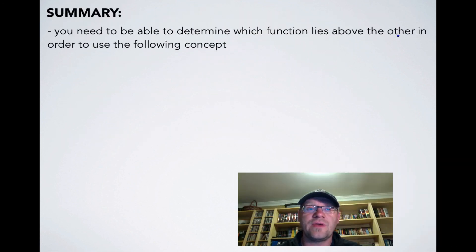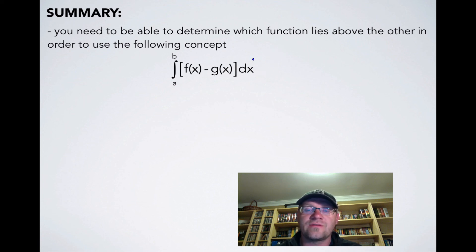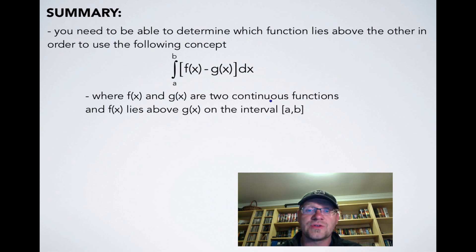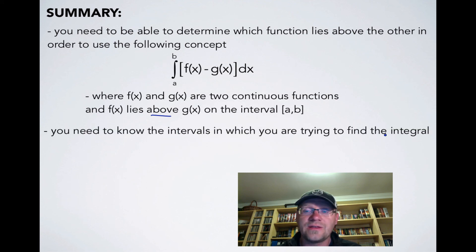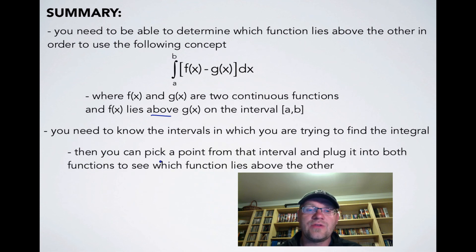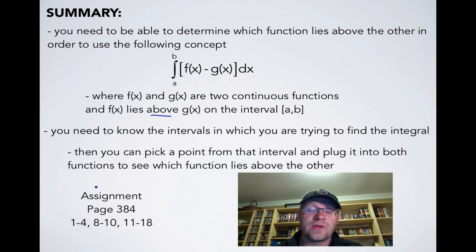In summary, you need to determine which function lies above the other using the formula: integral from a to b of f of x minus g of x dx, where f of x is above and g of x is below, over the interval a to b. Pick a test point from each interval and plug into both functions to determine which is on top. The assignment is page 384, questions 1 to 4, 8 to 10, and 11 to 18. Good luck and we'll see you in class.